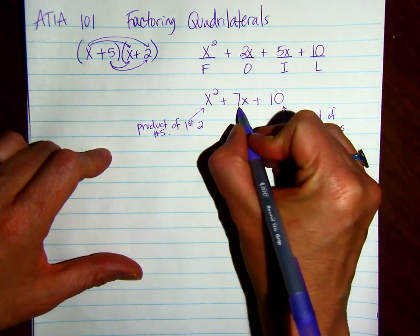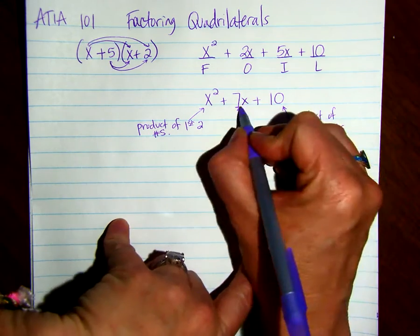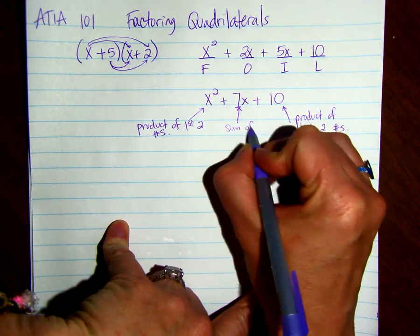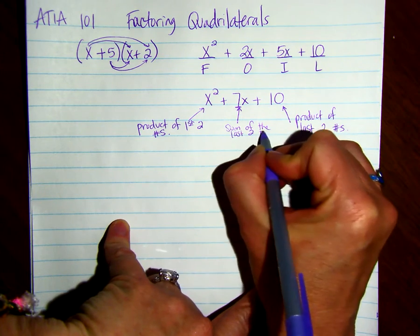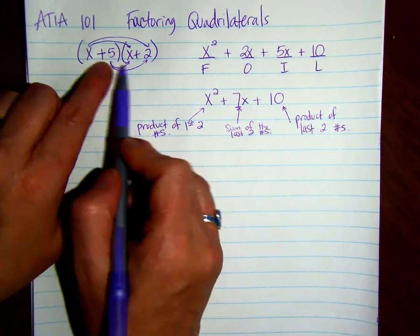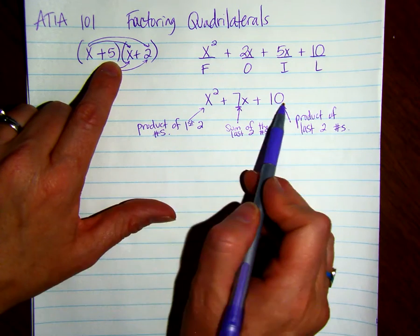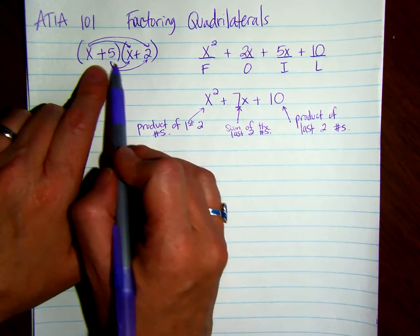And this number right here, just the 7, is the sum of the last two numbers. So notice here that we have 5 times 2 is 10. That's the product. But if we add 5 plus 2, we get a 7.